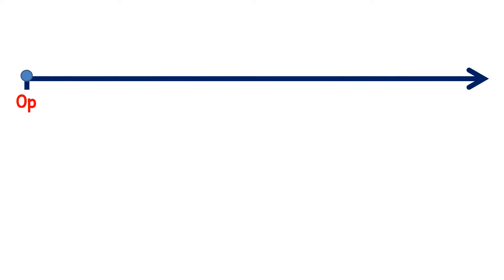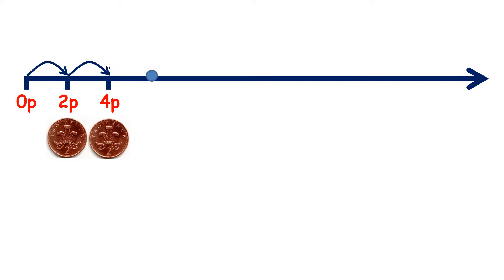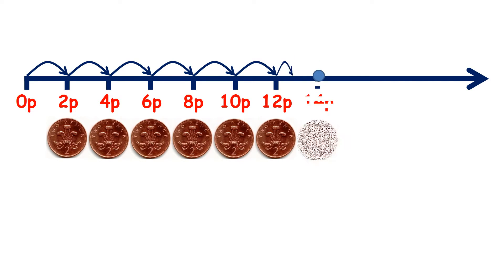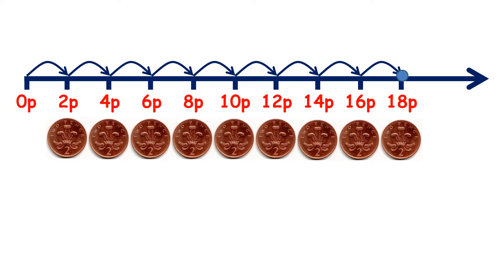Now knowing how to count up in 2's is useful because it means we can count 2p coins. So if we have 0p, we don't have any money. 2p, 4p, 6p, 8p, 10p, 12p, 14p, 16p, 18p, and 20p.